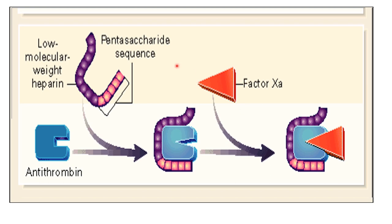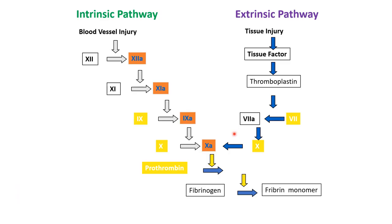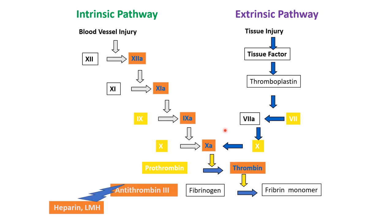This is the mechanism of action. The pentasaccharide of low molecular weight heparin binds with antithrombin, and this complex — the low molecular weight heparin-antithrombin complex — binds to factor 10 and inhibits it, acting as an anticoagulant drug. It also binds with antithrombin 3 and acts on thrombin and factor 10a.